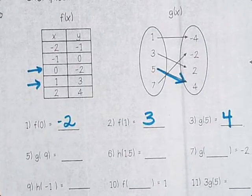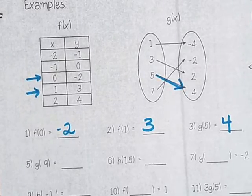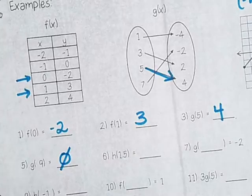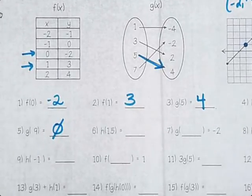g(9). Do we have a g(9)? No. So it's either undefined or no solution. Zero with a slash there. That's the easiest way to represent it. Undefined or just zero with a slash. No solution there.